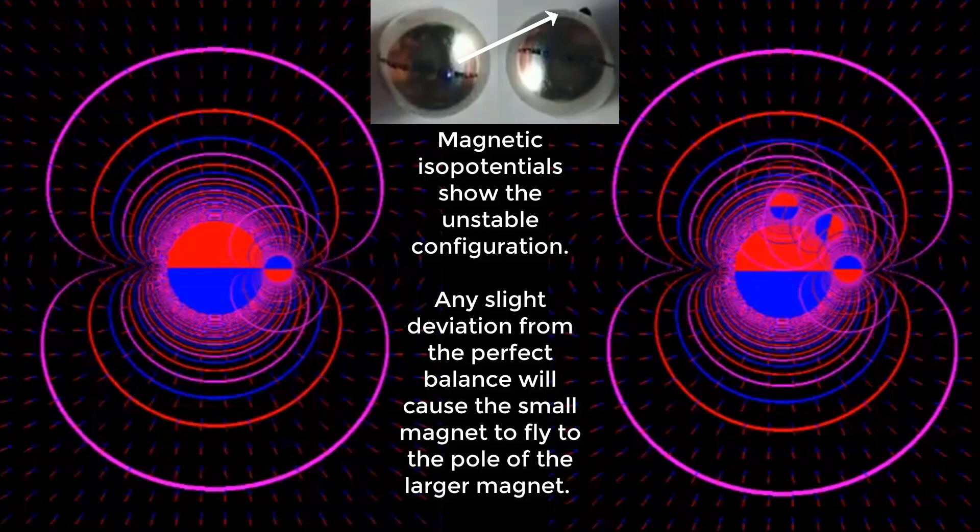Magnetic isopotentials show the unstable configuration. Any slight deviation from the perfect balance will cause the small magnet to fly to the pole of the larger magnet.